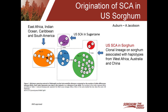One of the common questions that often comes up at meetings is where did the sugarcane aphid come from? We first identified the sugarcane aphid in sorghum in 2013, and then it really became an issue in 2014. One common thought was that the sugarcane aphid we were finding in sorghum must have come from sugarcane aphid that was in sugarcane. But in fact, what we've discovered is that the aphid in U.S. sorghum is actually a different biotype than what you find in sugarcane in the U.S.